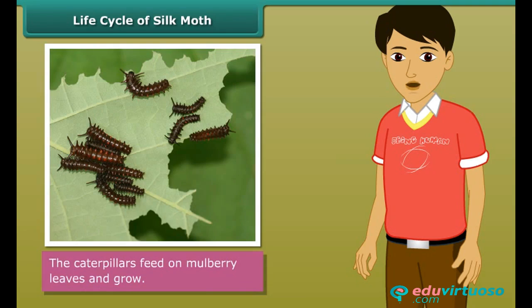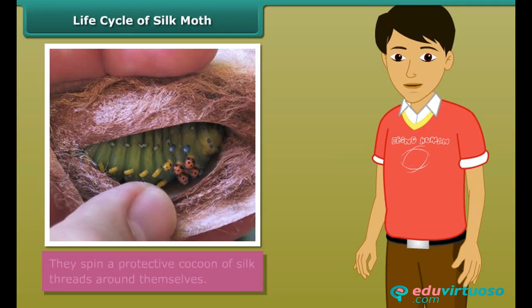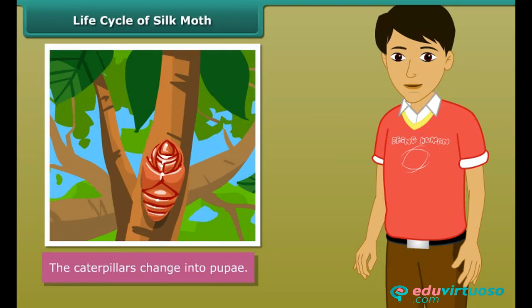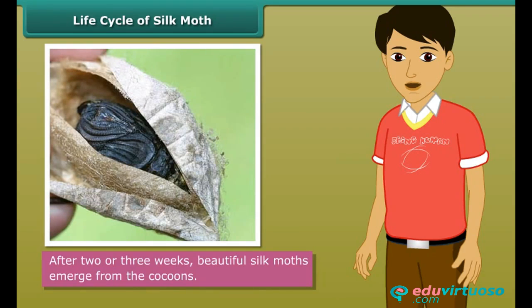These caterpillars feed on mulberry leaves and grow bigger and bigger. Then they spin a protective cocoon of silk threads around themselves. These cocoons are white or golden in color. Inside the cocoon, the caterpillars change into pupae. As the caterpillars pupate, they do not eat. After two or three weeks, beautiful silk moths emerge from the cocoon.